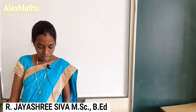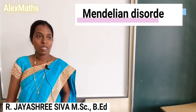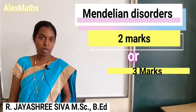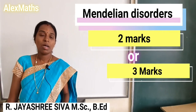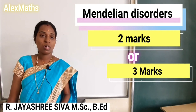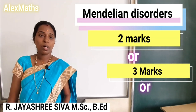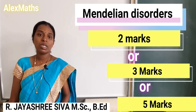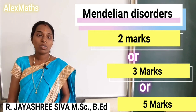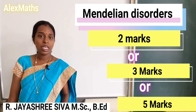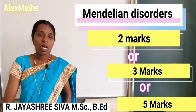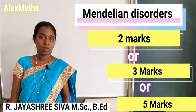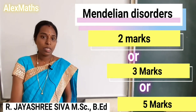Explain the Mendelian disorders — they are worth 2 to 3 marks. You will need to name them. What are genetic disorders? What are the Mendelian disorders? Name them — that can be 5 marks. Thalassemia is one Mendelian disorder: you will explain it for 5 marks. Genetic disorders and Mendelian disorders are worth 2 or 3 marks — be able to name and explain them.